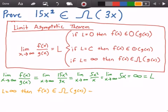Which implies that 15x squared, because 15x squared is our f of x, belongs to big omega of g of x. And 3x is our g of x. So it belongs to big omega of 3x.